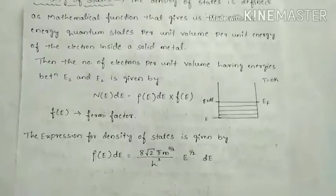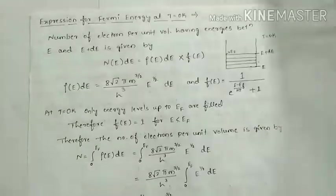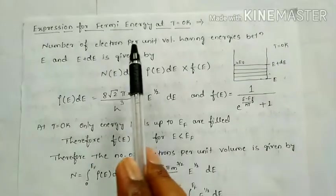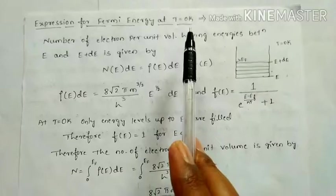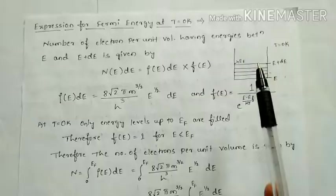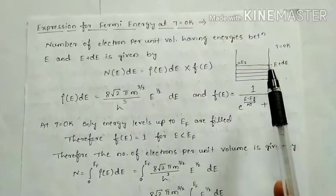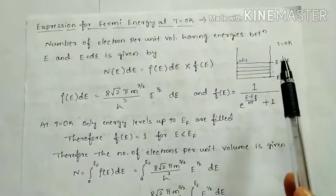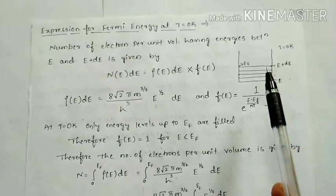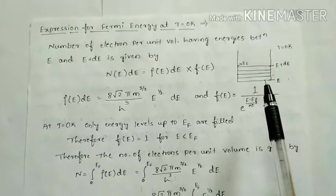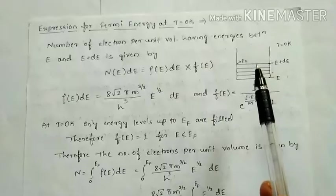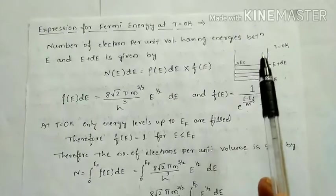Now we will go for a derivation — the expression for Fermi energy at 0 Kelvin. We already defined Fermi energy: the topmost collection of electrons at 0 Kelvin is called the Fermi level, and the corresponding energy is called Fermi energy. Below the Fermi energy, all the energy levels are filled with electrons, and the energy levels above Fermi energy are vacant.